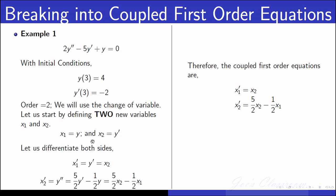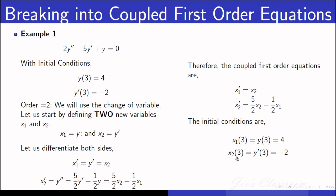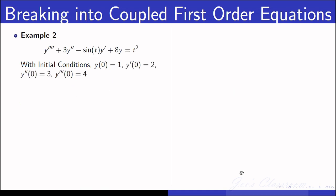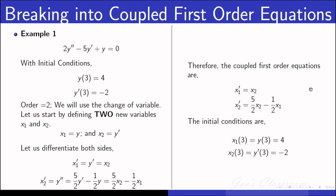The initial conditions given for y also have to be changed for x1 and x2. x1(3) equals y(3) which equals 4, and x2(3) equals y-dash(3) which equals -2. Now we can define a time range, say t=0 to 5 seconds, and use the same principle to solve the coupled differential equations.